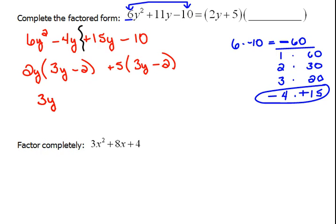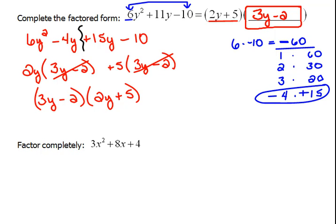Because we have that common binomial factor, we can now pull it out of both of those terms, and we're left with 2y plus 5. Here, they already have the 2y plus 5. They're looking for the second factor, which we found to be 3y minus 2.